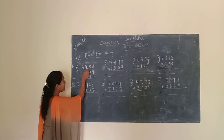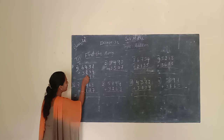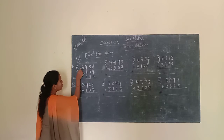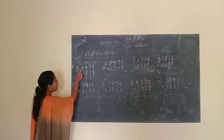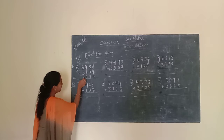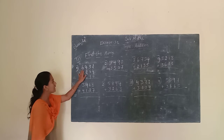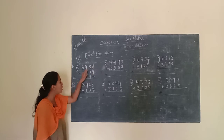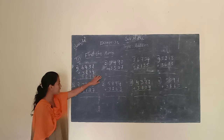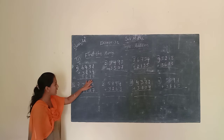Next, move to the 100th place. 100th place is 4 and 2. 4 plus 2 is how much? 4 plus 2 is 6. We have to write 6. Next, move to the 1000th place. 1000th place is 6 and 3. 6 plus 3 is 9. We have to write 9. So 6,432 plus 3,264 equals 9,696.